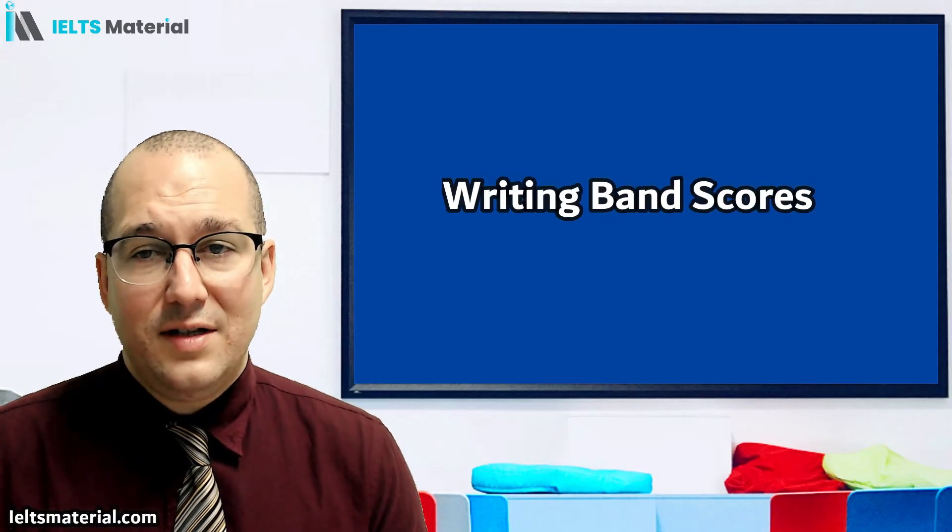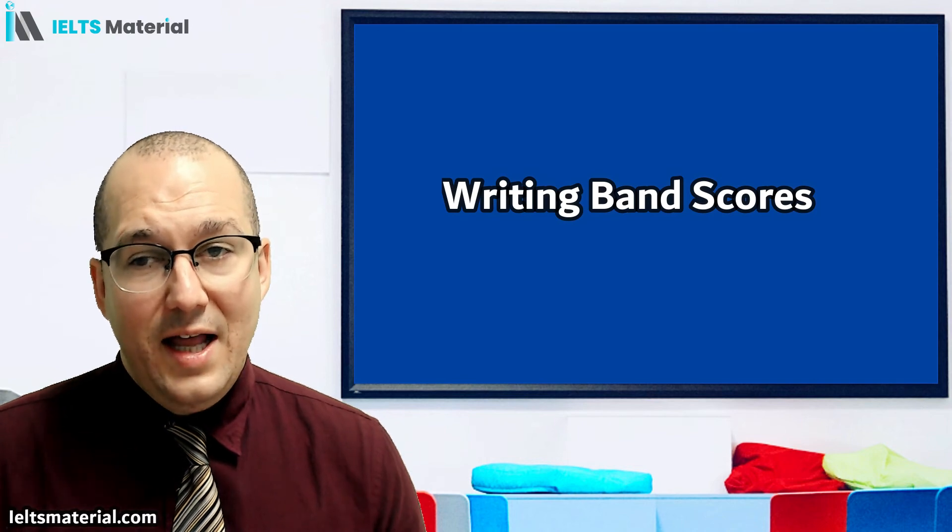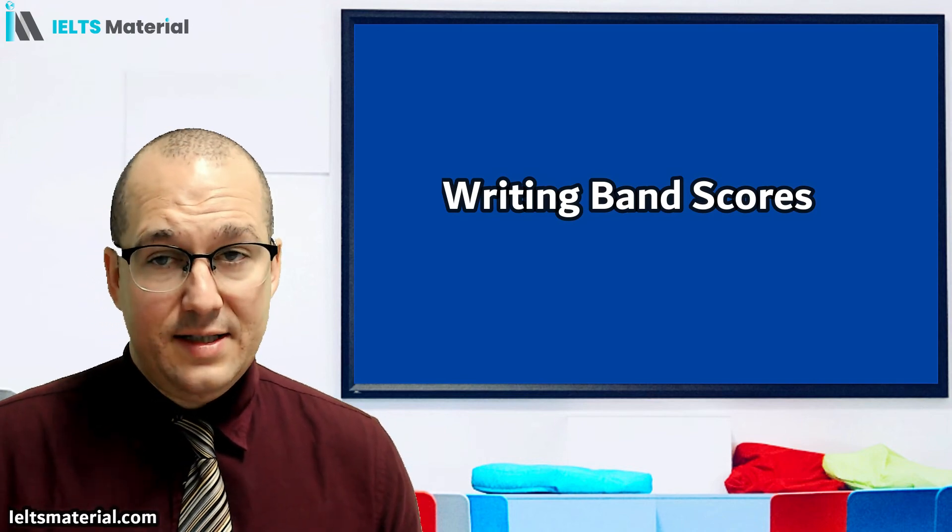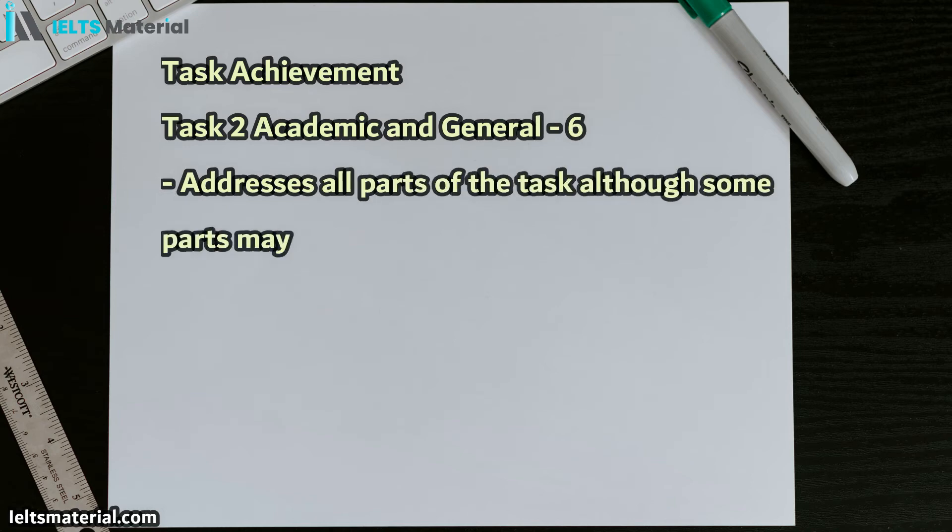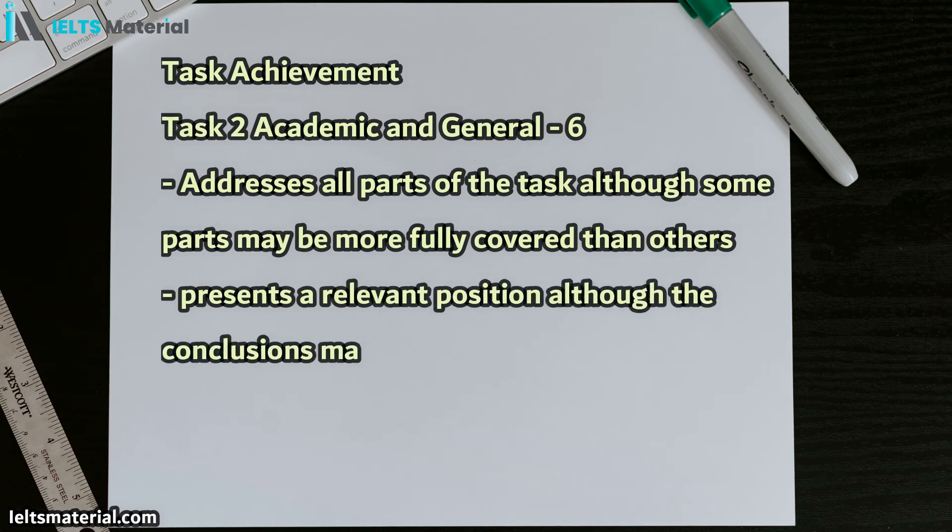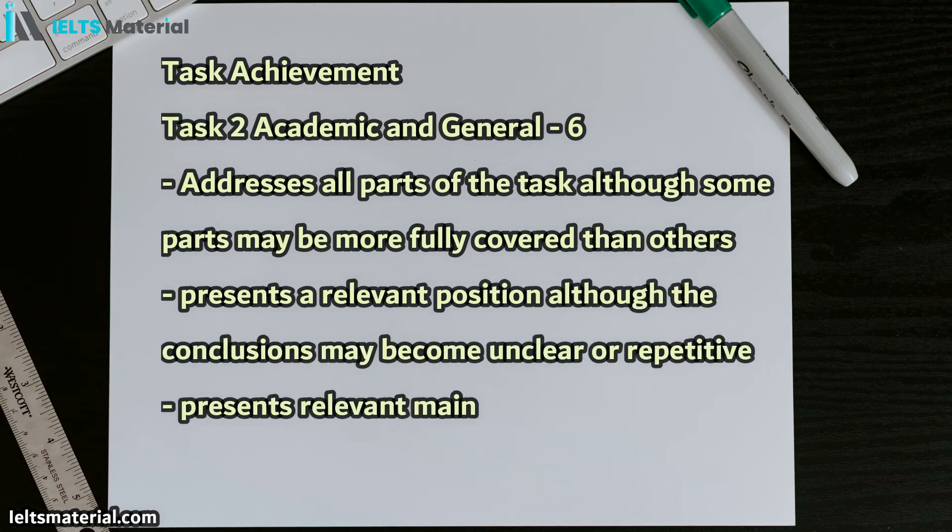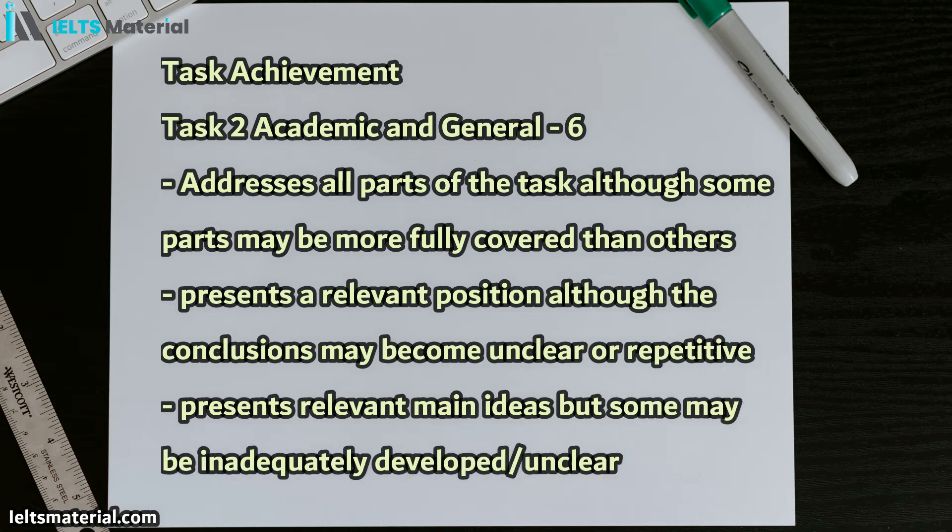Okay, now let's have a look at those writing band scores and what you can expect. And, again, I'll go into detail of what a band 6 is for each category. Well, let's start with Task Achievement by first looking at Task 2 Achievement for General and Academic. And this is where you need to address all the parts of the task, although some parts may be more fully covered than others. You need to present a relevant position, although conclusions may become unclear, or repetitive. And you need to present relevant main ideas, but some may be inadequately developed or unclear.